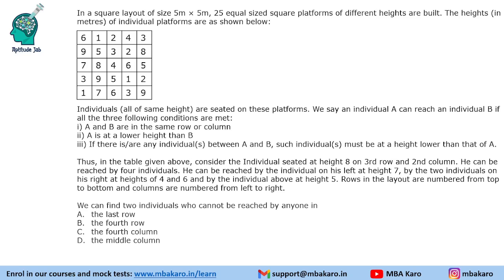Next question: we need to find 2 individuals who cannot be reached by anyone. We will go option by option. In the last row, only 1 cannot be reached by anyone — all others can be reached. So the last row does not have 2 such individuals. In the fourth row, only 1 cannot be reached. In the fourth column, we find 1 and also 2 cannot be reached by anyone. So in the fourth column, there are 2 people who cannot be reached by anyone — that is our answer.